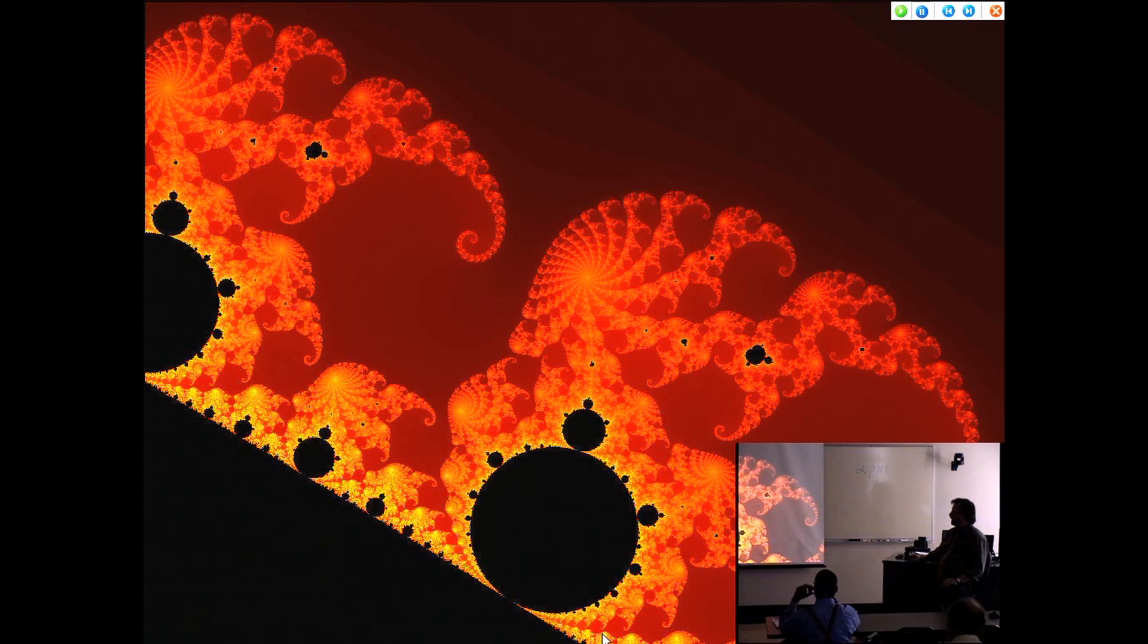If you study chaos theory, they can actually generate these Mandelbrot sets. You see, there's a larger image, and if you look at the smaller one, it's a repetition of the larger image. If you look at that one, that's a repetition of this, which is a repetition of that.